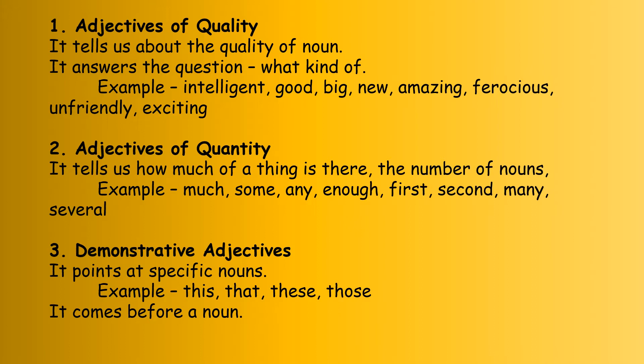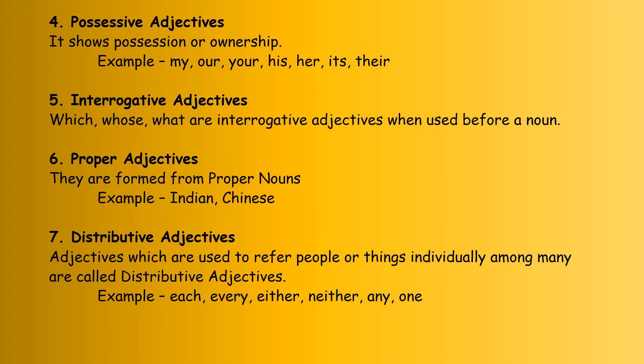The third one is demonstrative adjectives. They point to specific nouns. The words this, that, these, those are demonstrative adjectives when they come before a noun. If these words come before a noun, then they are demonstrative adjectives.